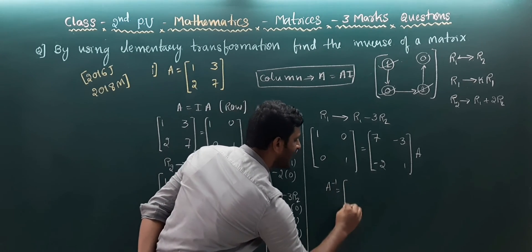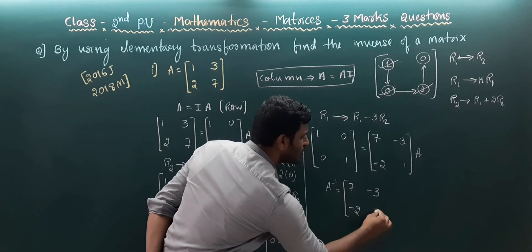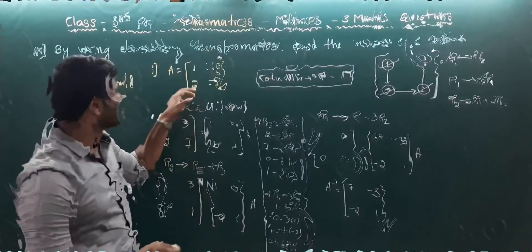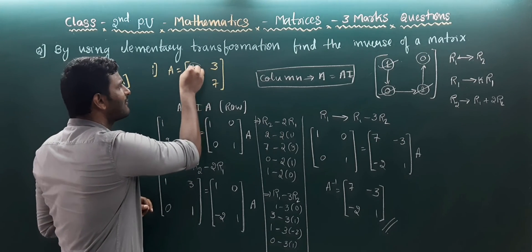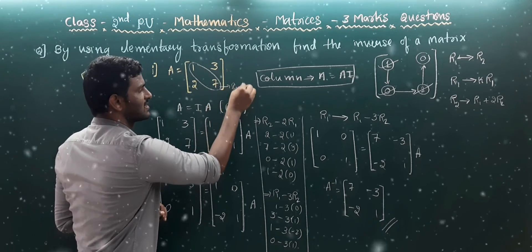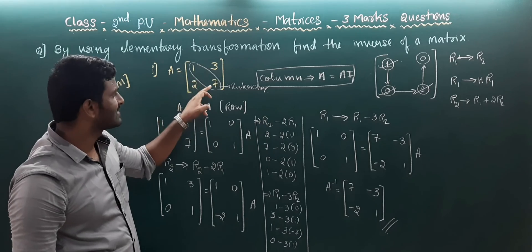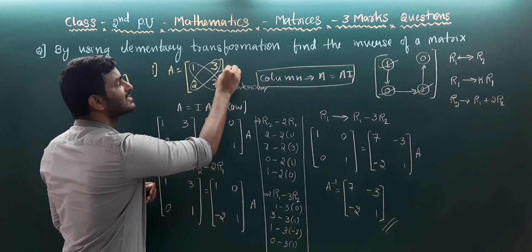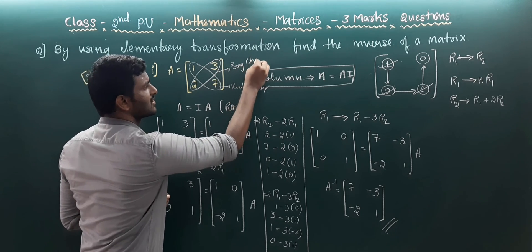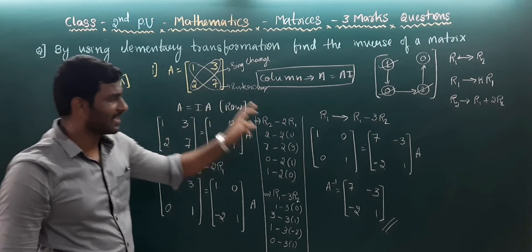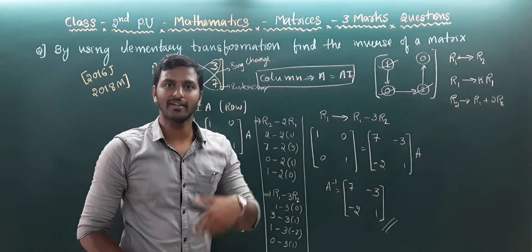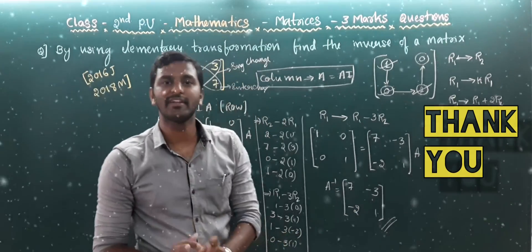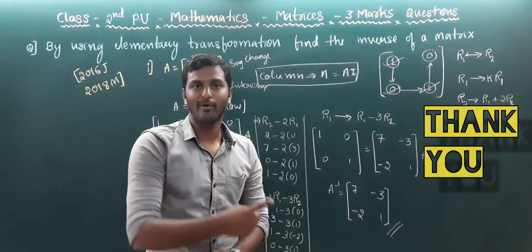Therefore A inverse is [7, -3; -2, 1]. We can also verify the answer. In the original matrix [1, 3; 2, 7], interchange the diagonal elements 1 and 7 to get 7 and 1, and sign-change the off-diagonal elements: +3 becomes -3, and +2 becomes -2. That is the verification of the final answer. Pause the video and note it down.